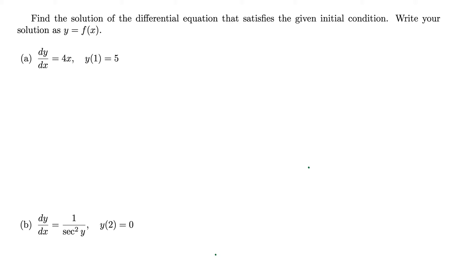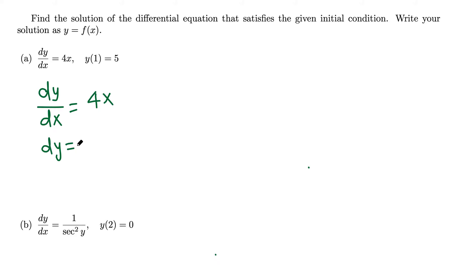Here we have dy over dx equals 4x. Move dx to the other side so dy equals 4x dx. Now we've separated the variables: 1 dy equals 4x dx.